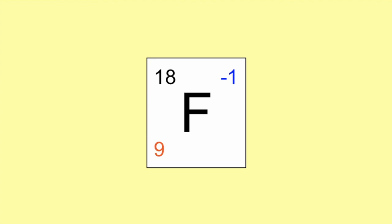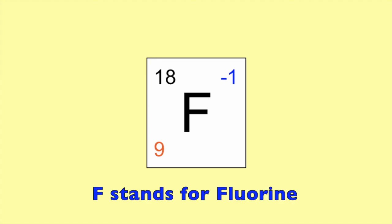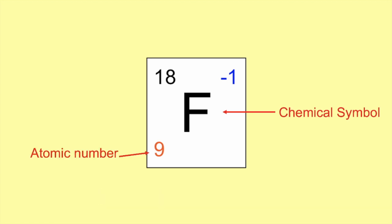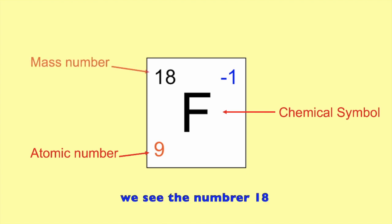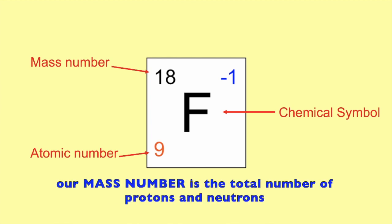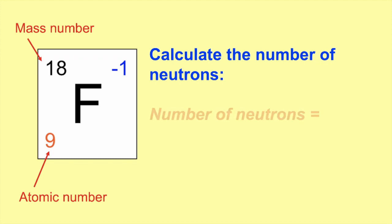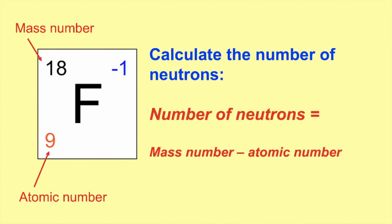So let's take a look at this example of isotope notation. First, we're going to look at that big letter in the middle of the box — that is F, and it stands for fluorine. F is our chemical symbol. Next, we look in the lower left — that is our atomic number, sometimes abbreviated Z. Our atomic number is 9, meaning we have 9 protons in this atom. If we go to the upper left, we see the number 18 — this is our mass number, the total number of protons and neutrons. To figure out how many neutrons we have, we take the mass number and subtract the atomic number: 18 minus 9 equals 9. So this atom has 9 protons and 9 neutrons.